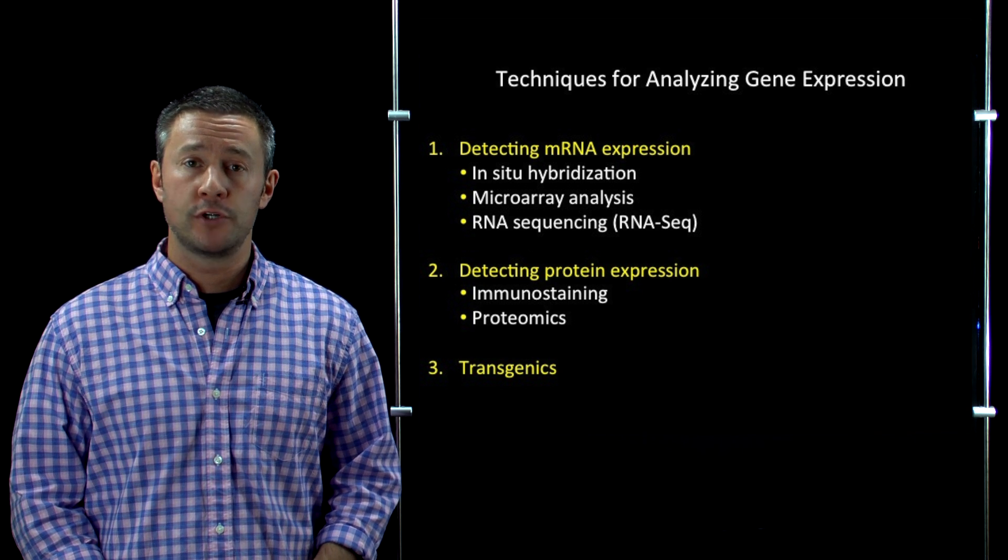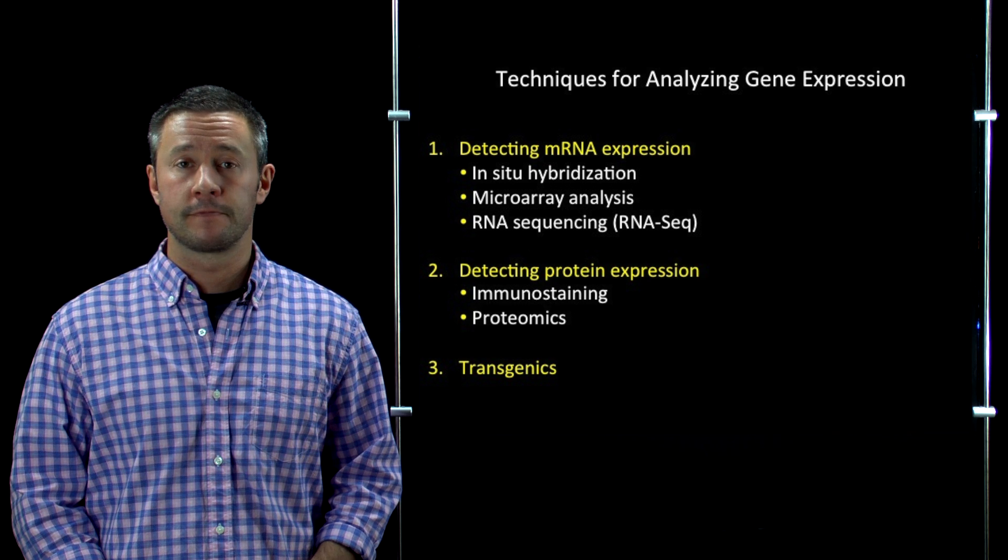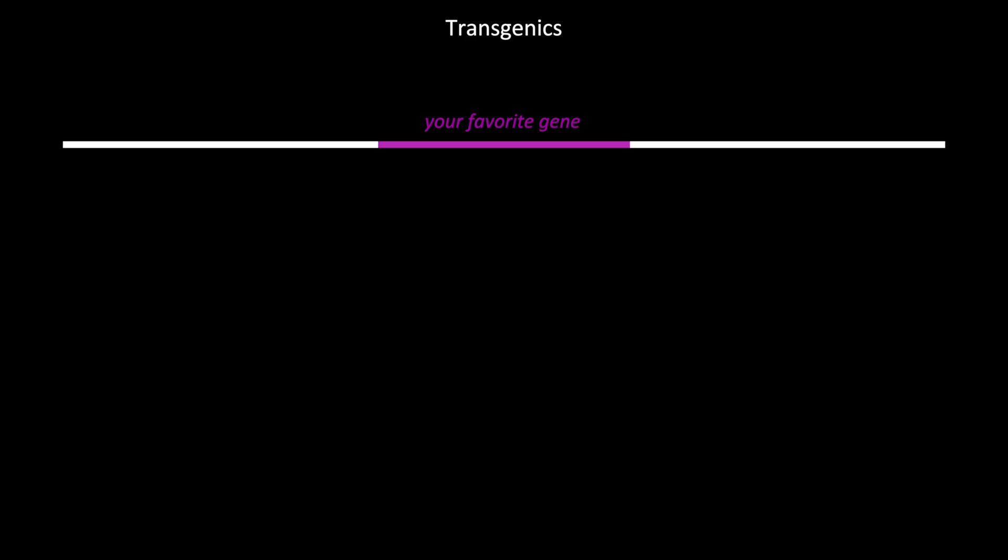Well, there are a couple of approaches you could take using transgenics to figure that out. First, you could just replace your gene of interest with a reporter gene, which is a gene encoding some kind of easily detectable protein, something like GFP.